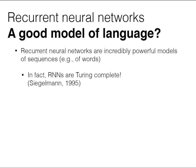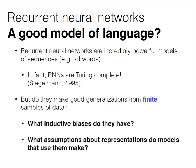In fact, yes — RNNs are capable, given enough capacity, of computing any function. They are Turing-complete; this can be proven. Obviously a Turing machine can compute anything computable. But that's not the end of the story. The real question is: do they make good generalizations from finite samples of data? This gets us back to a different set of questions: what inductive biases do they have, and what assumptions about representations do models make?